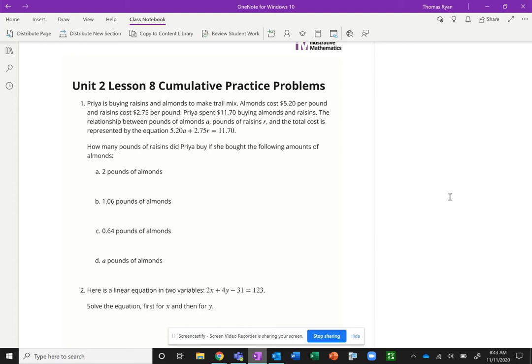Problem one: Priya is buying raisins and almonds to make trail mix. She knows how much the almonds cost, how much the raisins cost each per pound. She knows she spent $11.70 in total. The relationship between the pounds of almonds and the pounds of raisins and the total cost is given by this equation, which should make sense because the $5.20 is connected with A for almonds, the $2.75 connected with R for raisins. If she knows she bought this much almonds, how many pounds of raisins did she buy?